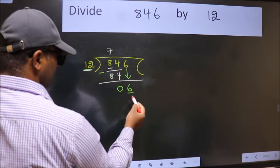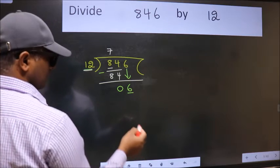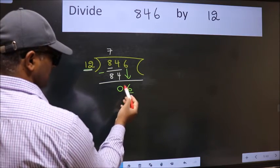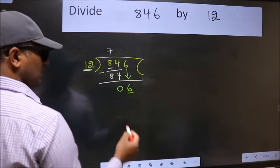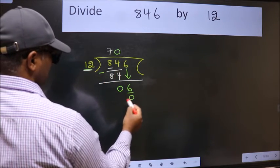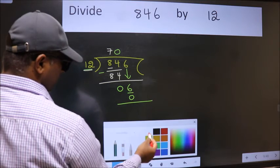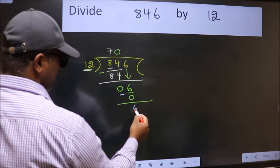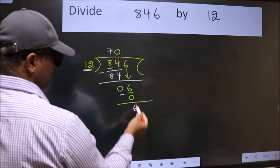0 here. So 12 into 0 is 0. Now we subtract, we get 6. Over here we did not bring any number down, and 6 is smaller than 12, so now we can put dot and take 0, so 60.